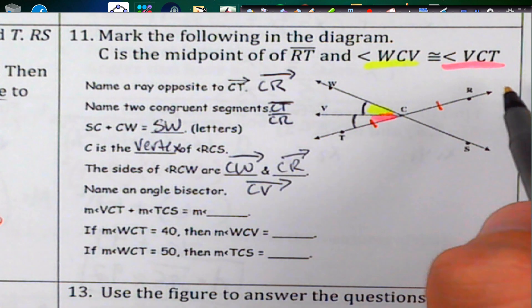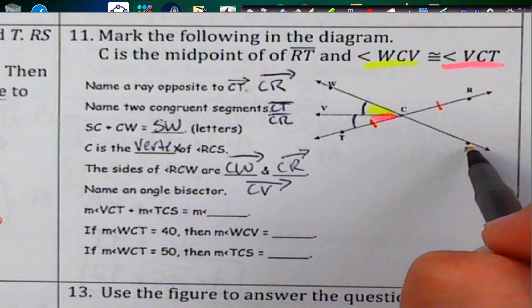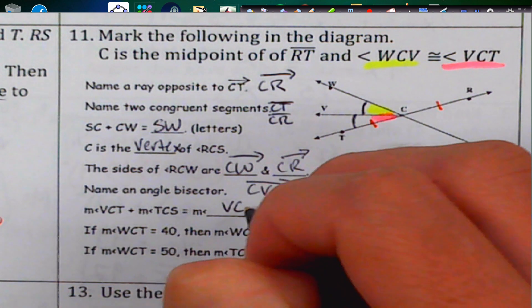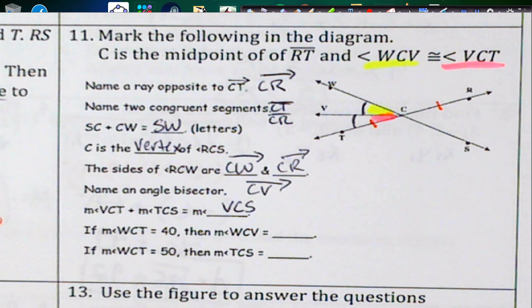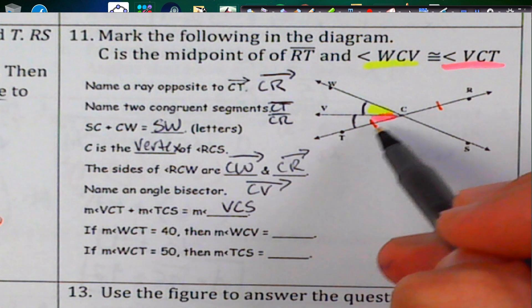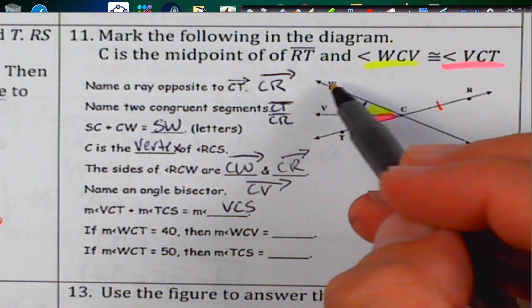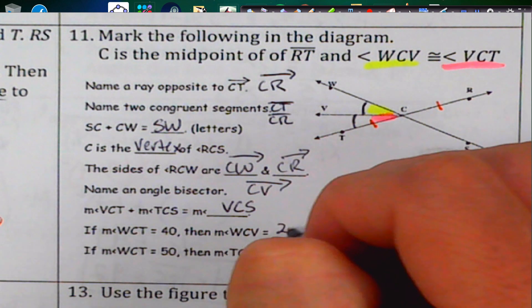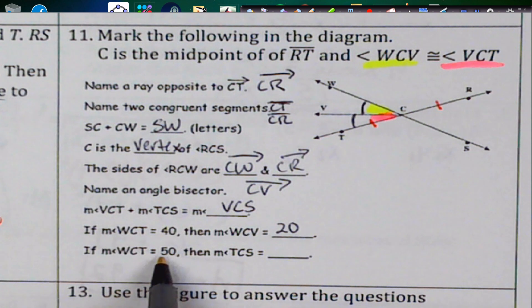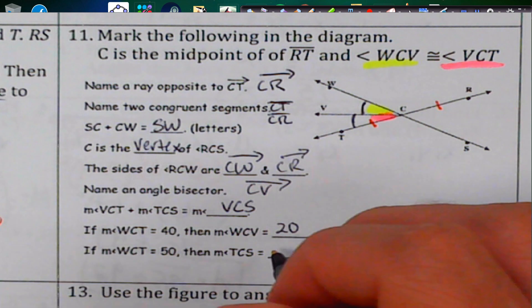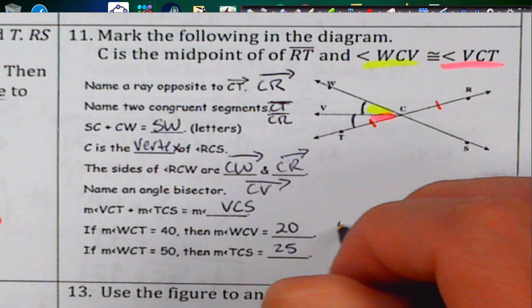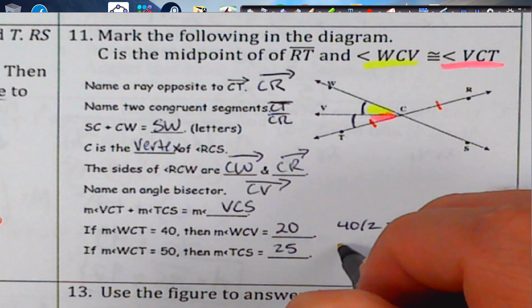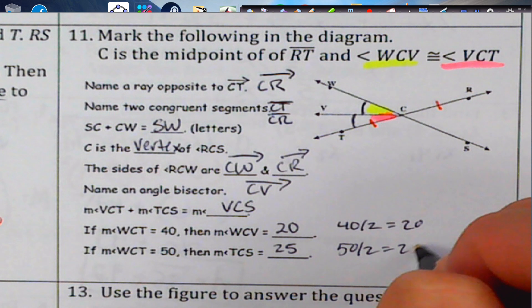VCT and TCS add together to make angle VCS. If angle WCT equals 40°, then angle WCV equals 20° (half of 40). Similarly, if an angle were 50°, each half would be 25°.